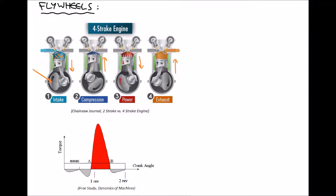There are a couple of important things to note. First, the full cycle in a four-stroke engine takes two revolutions. Second, of those four stages, the only stage where we're producing power is stage three — the power stage. During stages one, two, and four we're actually using energy. It takes energy to draw the air-fuel mixture into the cylinder and to force the exhaust gas out. Underneath the diagram we have a graph showing torque on the y-axis against crank angle on the x-axis.